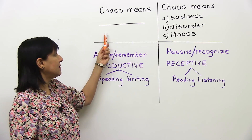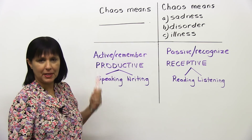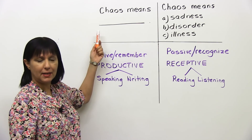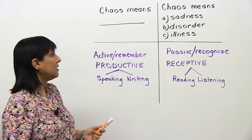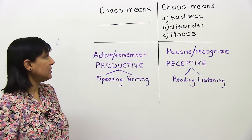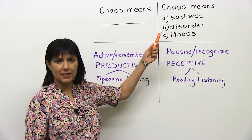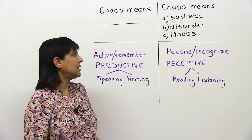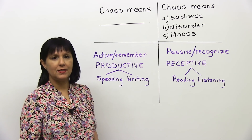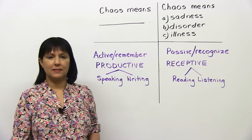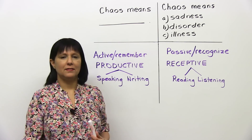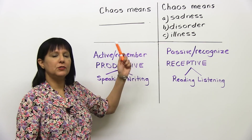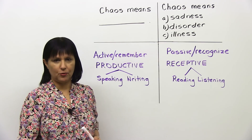Chaos means something — fill in the blank. In other words, they're asking you: the word chaos means what? Or, second question, chaos means: A. Sadness, B. Disorder, C. Illness. Think about that for a second. So, which of these two questions was easier for you?